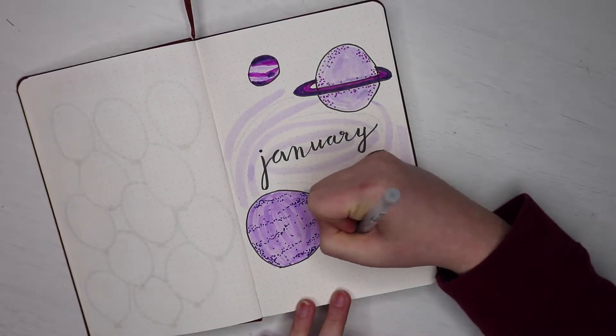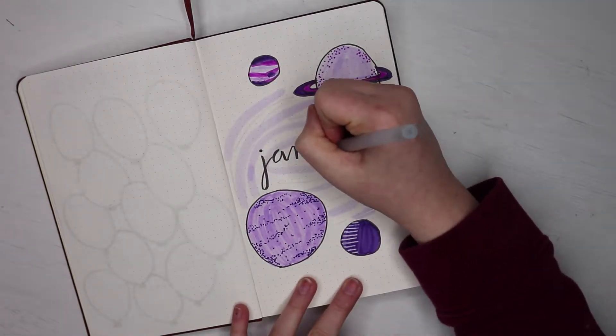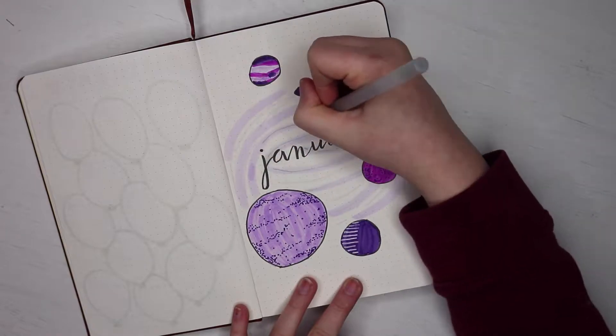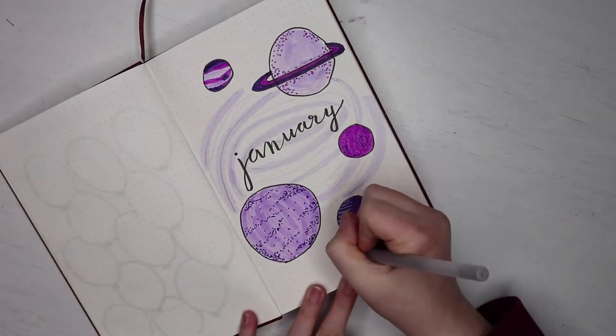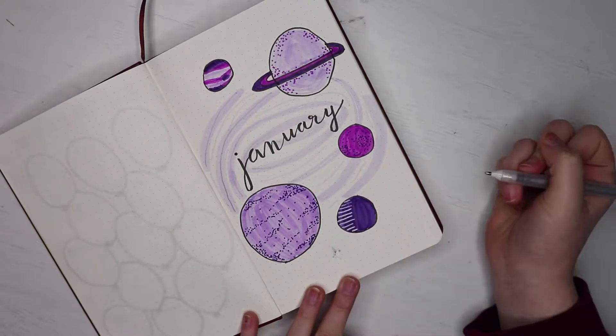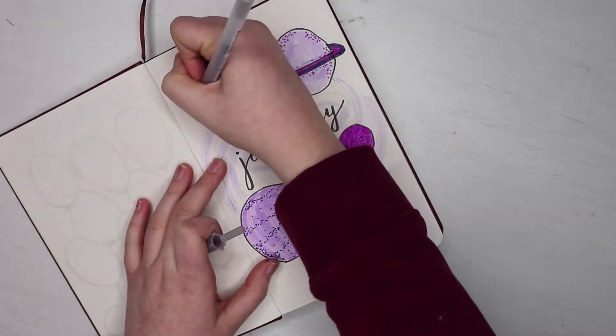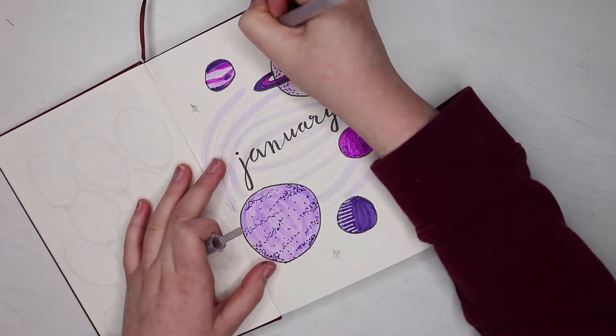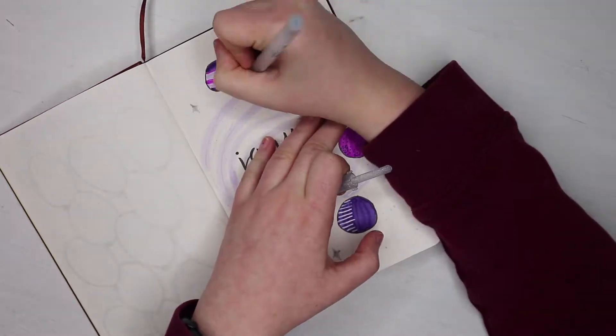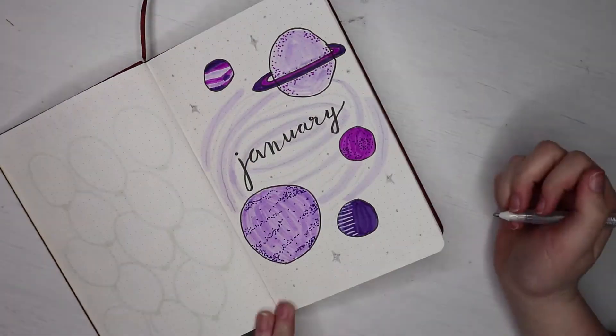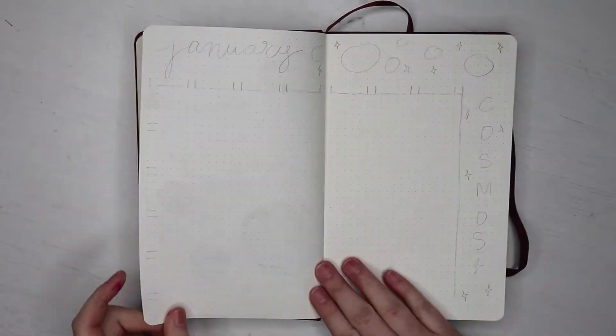So now I'm taking that silver jelly roll metallic pen and I'm just going over those white lines to make it match. And I'm also adding lines into the thick purple strip just to make the page sparkle more. And then I'm adding some stars to make it look like a galaxy. And this is the finished title page for January.